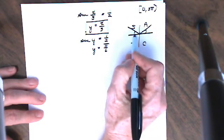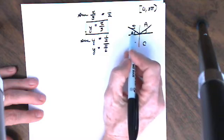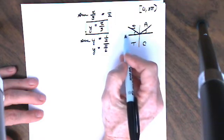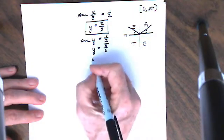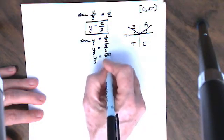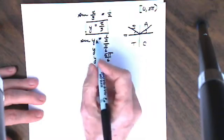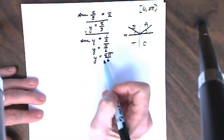That would be this angle in quadrant 1. To get the same angle, I use the reference angle here in quadrant 2. This is π, and π minus π over 6 is 5π over 6. So between 0 and 2π for y, I have two answers.